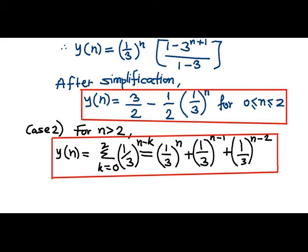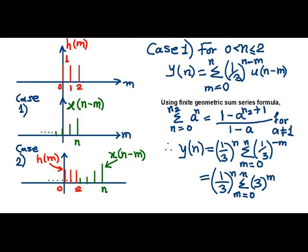In the second case, where x(n-m) when n is now crossing the instance that is 2 of the rectangular function.